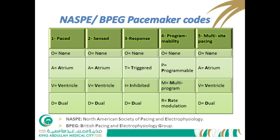Rate modulation means that if a patient exercises or needs a higher heart rate, the pacemaker is intelligent enough to detect this and increase the pacing rate to meet their needs. The fifth letter — multi-site pacing — involves inserting an additional lead in the atrium, ventricle, or both, to ensure no beats are missed.